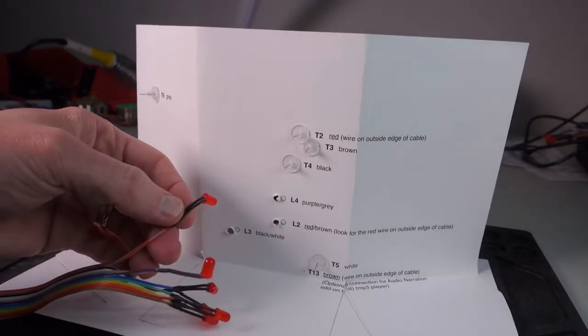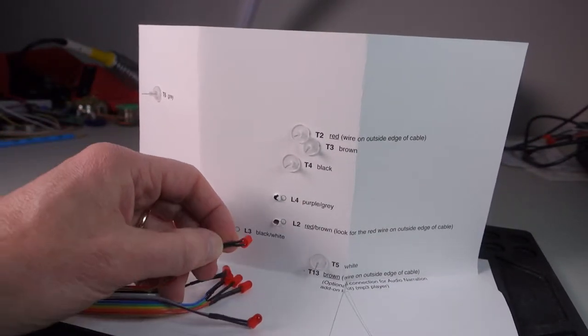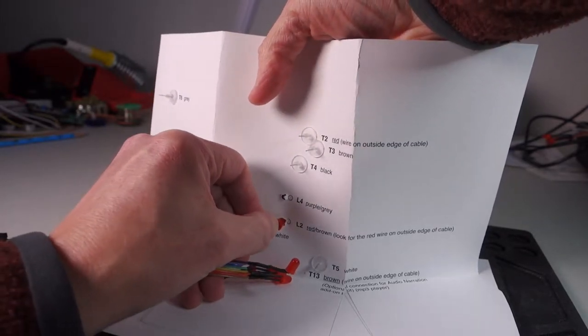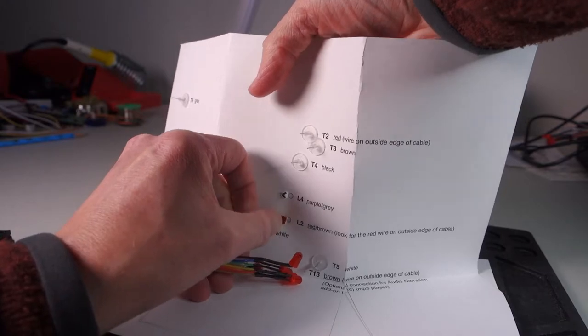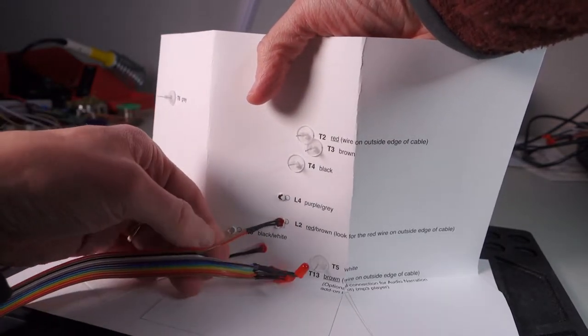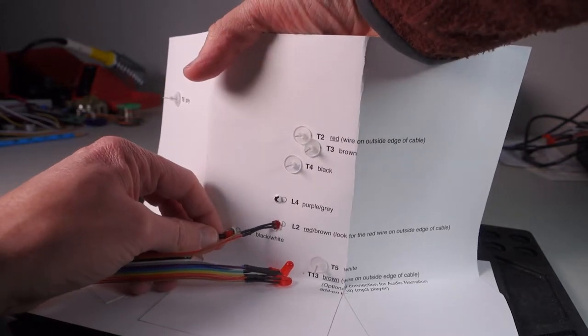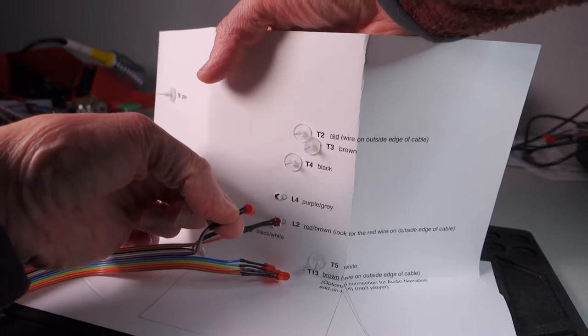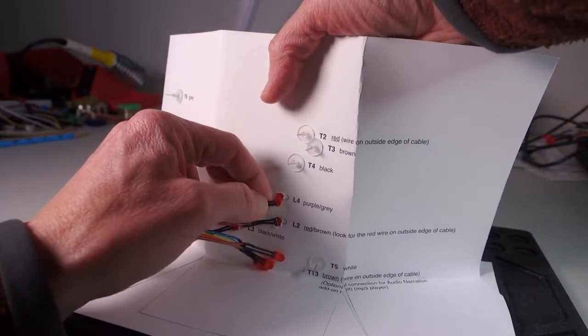Turn the model around and starting with the brown red wire, push the LED into the spot labeled L2. Only push the LED in up to the lip. Don't push it all the way through the card. Then the black-white goes in L3. And finally the purple-gray goes in L4.